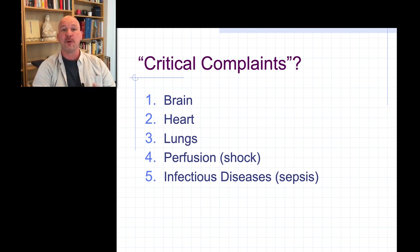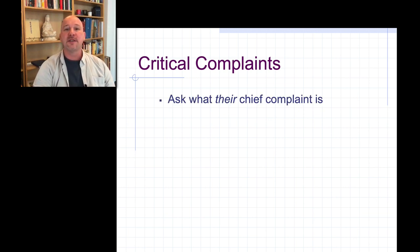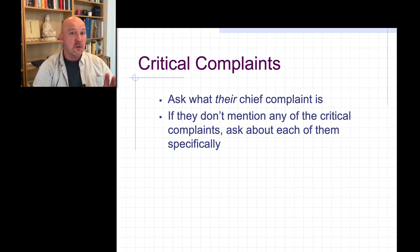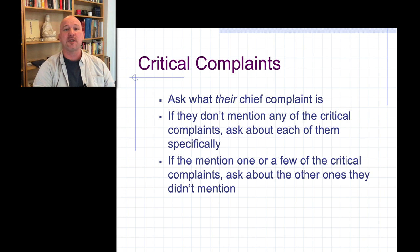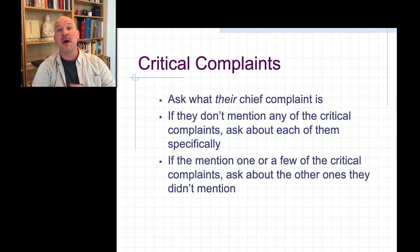You need to ask about those things to make sure you've got a really good understanding of what the actual chief complaint is. So: brain, heart, lungs, perfusion, and infectious diseases. When the patient presents their chief complaint, I go through and make sure none of those critical complaints are present. If they don't mention any of them, I'll ask about each specifically. If they mention one, I ask about the other four. I'll specifically ask about all five critical complaints on every patient to make sure there's no hidden problem I should be aware of as a competent, thorough clinician.